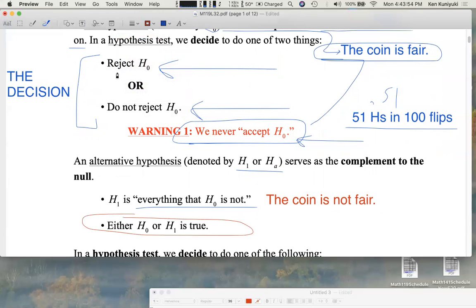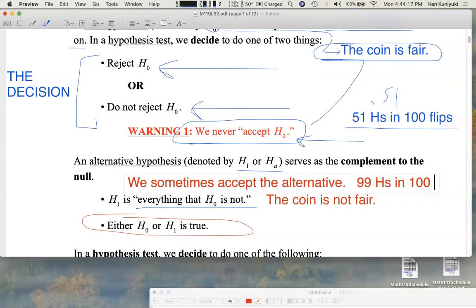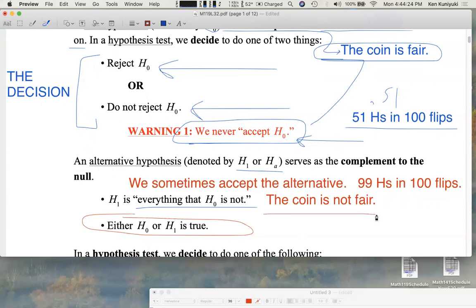We're either going to reject the null or not going to reject the null. And although we never accept the null, we do sometimes accept the alternative. For example, if a coin comes up 99 heads in 100 flips, we're ready to really dump the idea the coin is fair, and we sometimes accept the alternative that the coin is not fair.